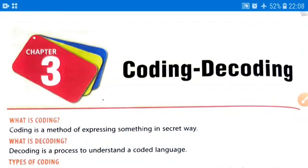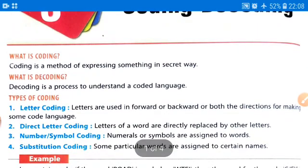A simple example from home: when a guest comes to your home and after your mother serves tea, the guest does not leave. Your mother secretly informs your father with expressions or signals not to ask him for food. This is coding by your mother and decoding of that information by your father.